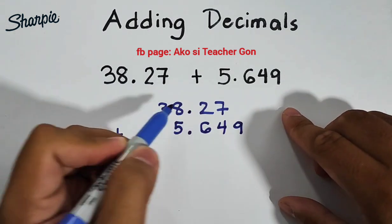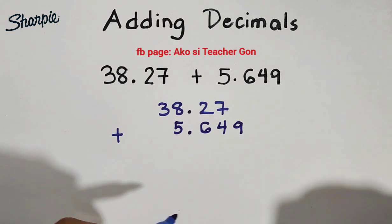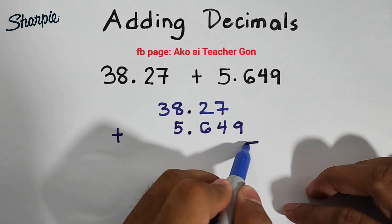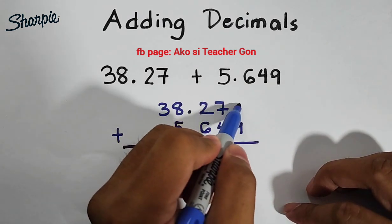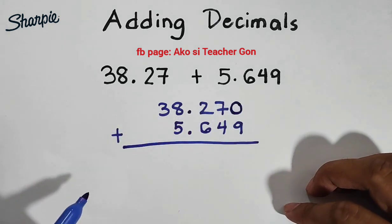In addition and in subtracting decimals, it is important for us to align the decimal points. So we will add them and since as you can see we have your space, you can put 0 here and then we will proceed with addition.